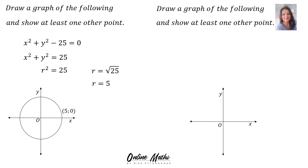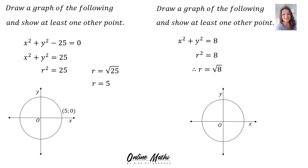Example 2: Draw a graph of the following and show at least one point, given x² + y² = 8. To sketch the circle we need the radius: r² = 8, so taking the square root gives r = √8. You don't have to give the answer as a decimal — √8 is fine. Therefore, there is your circle with the midpoint at the origin and radius √8. A point on the circle is the y-intercept, the point (0, √8).